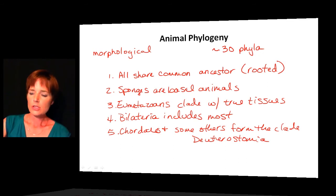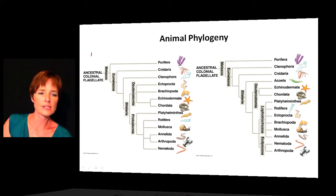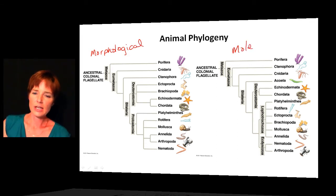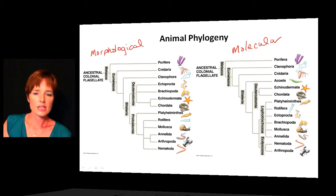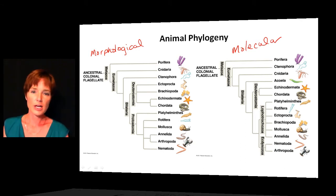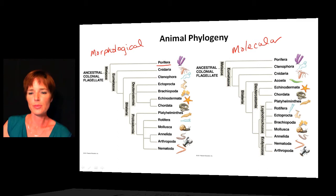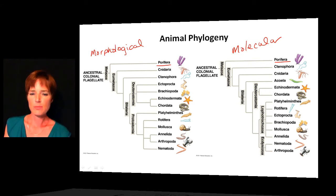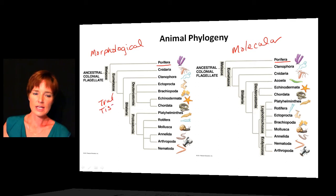Comparing two different trees — one based on morphological data and one based on molecular data — the two trees are very similar to each other. Both are rooted trees with a colonial flagellated protist giving rise to animals, consistent with the choanoflagellates we discussed. Both place sponges (the Porifera group) as the basal or most primitive group, branching off earliest. After that, all other animals fall into the Eumetazoa on both sides.